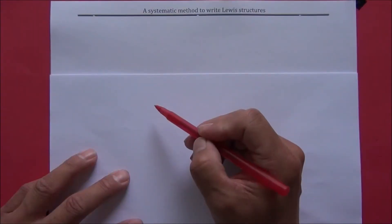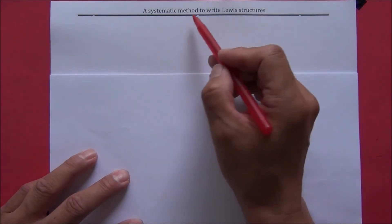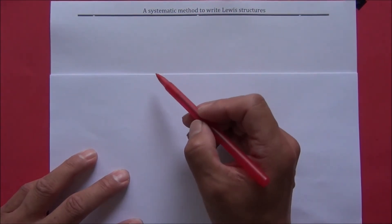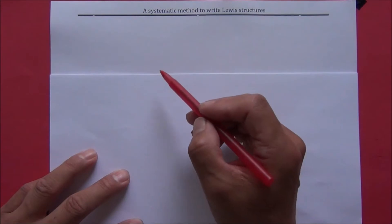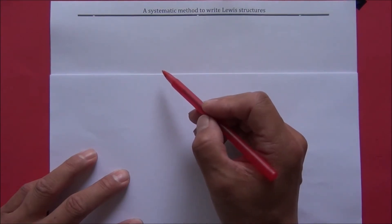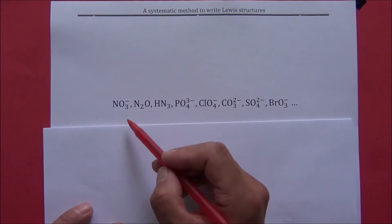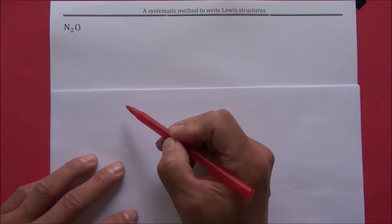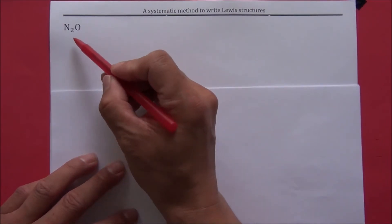Good morning. I am Dr. Huang. Today, I'm going to teach you a systematic method to write Lewis structures. This method is very powerful for molecules or ions whose Lewis structure is difficult to write. Here is a list of them. The example I'm going to use to illustrate this method is N2O.